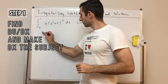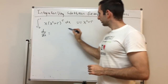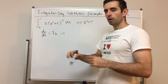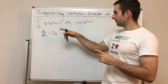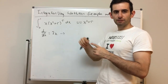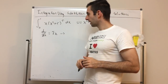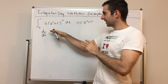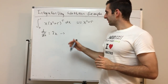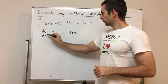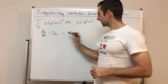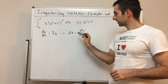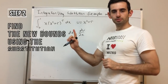To find du/dx, we differentiate: the derivative of x² + 5 is just 2x. Now we want to make dx the subject, because that lets us do a direct substitution for dx. I find this way easier than other methods — it's a direct substitution. So dx = du / 2x. We just swap it in directly.